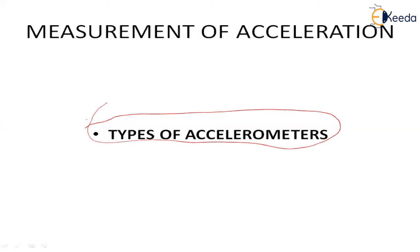Generally, accelerometers are classified based upon the type of the spring element and the form of the damping used — on the basis of the damper and on the basis of the spring. Accelerometers are classified into three types: one is called the potentiometric accelerometer, the second is called the LVDT type accelerometer, and the third is the piezoelectric type accelerometer. In this session we are going to discuss each one in detail.